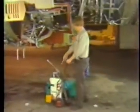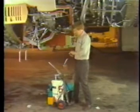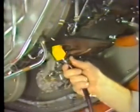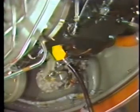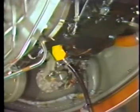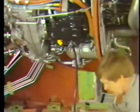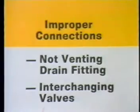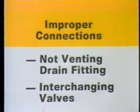Begin servicing procedures by positioning a pressure fill oil servicing cart under the IDG. Remove the overflow and pressure fill dust caps. Attach the proper overflow drain line to the overflow drain valve. Note that servicing the IDG with the drain line not connected or connected improperly can result in the IDG becoming incorrectly filled, which can cause internal damage during operation. Improper connections can be caused by neglecting to vent the drain fitting valve or by interchanging the pressure fill and overflow valves.